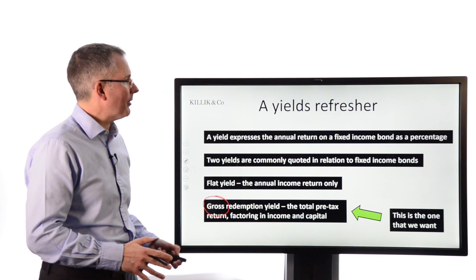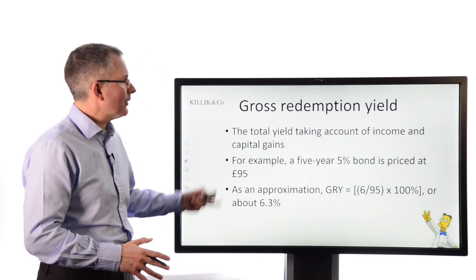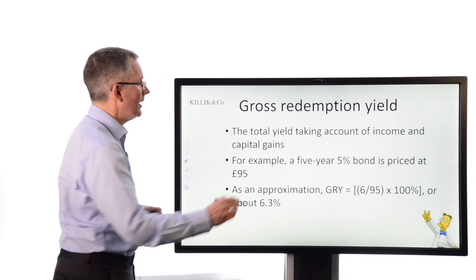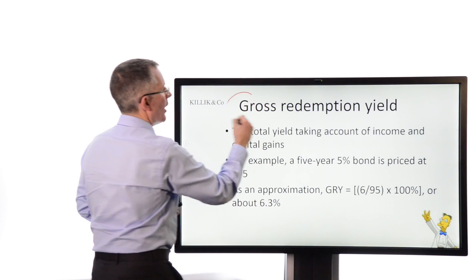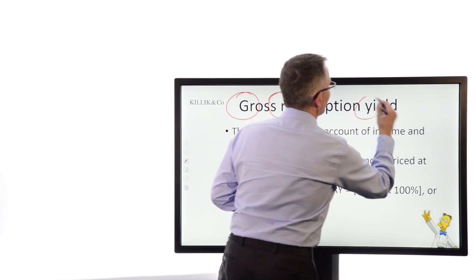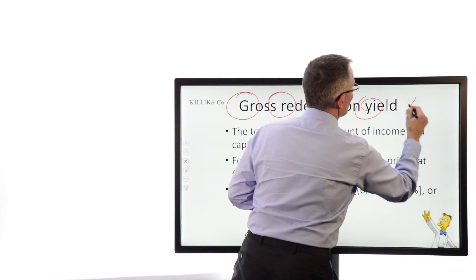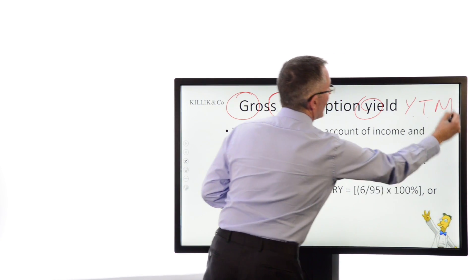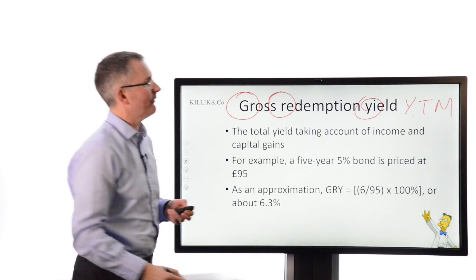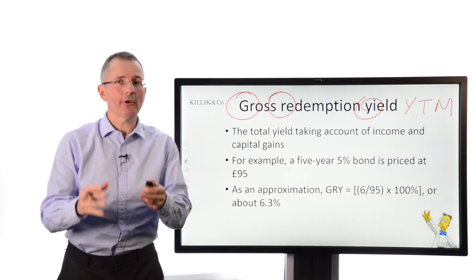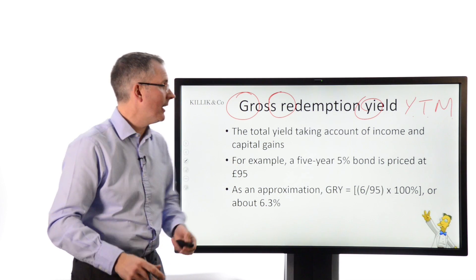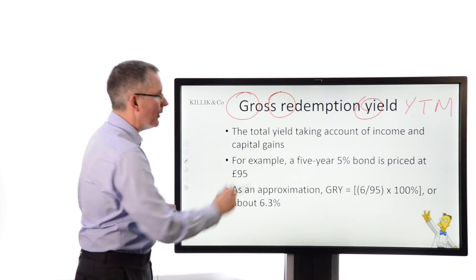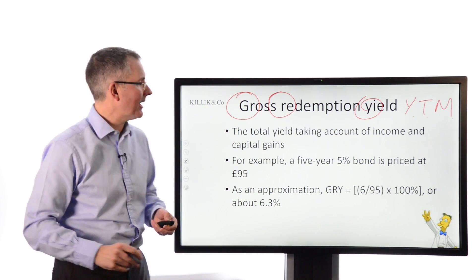The gross redemption yield is also known as the yield to maturity, or YTM. Bond markets love their jargon. Basically, it's the total yield taking account of both income and capital gains.